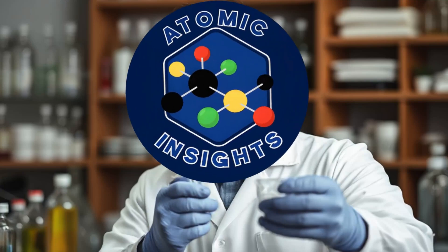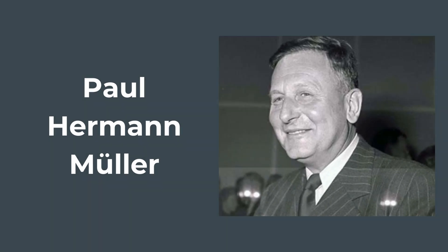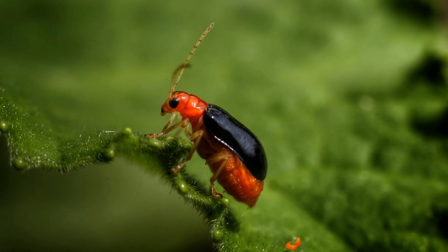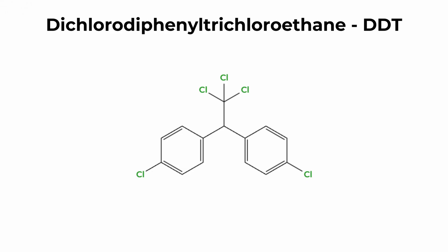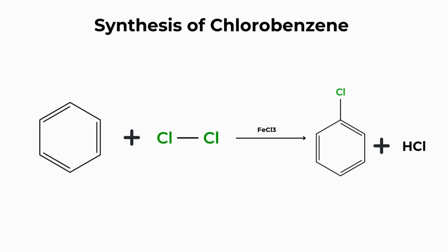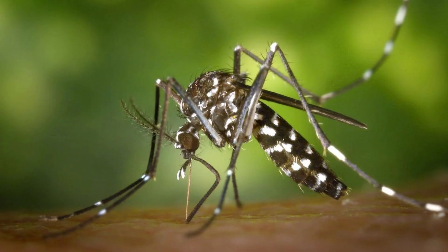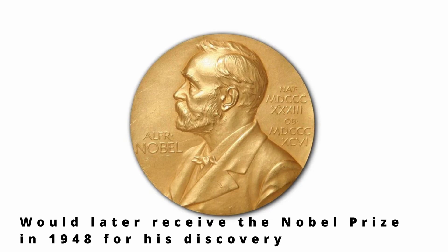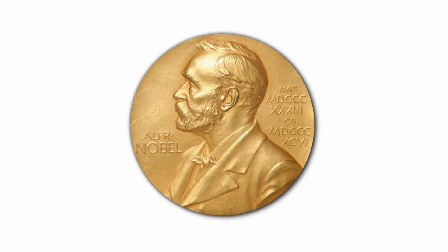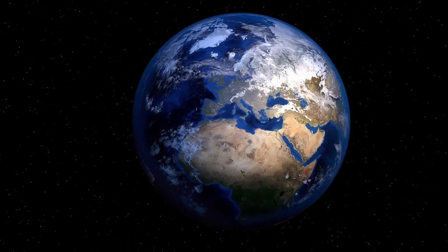The story of DDT begins in 1939 with the work of Swiss chemist Paul Hermann Müller. While working for the Swiss pharmaceutical company Geigy, Müller was tasked with finding a new insecticide to combat agricultural pests. After experimenting with various chemical structures, he synthesized dichlorodiphenyltrichloroethane by attaching chlorine atoms to a benzene ring structure, producing a compound with remarkable toxicity against insects. Müller would later receive the Nobel Prize in Physiology or Medicine in 1948 for his discovery of DDT's effectiveness as an insecticide.